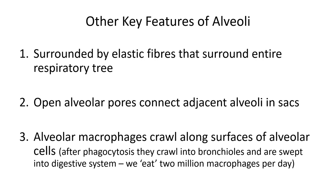Macrophages wander from one alveolus to the next and gobble up anything that shouldn't be there. However, macrophages can only consume a few bacteria before they die — they simply don't have enough enzymes to break down more. When macrophages are dying from this overeating within the lungs, they wander higher up into the respiratory system until they get caught by the mucociliary system — the conveyor belt that carries them up into the throat to be swallowed along with any bacteria they contain. We eat millions of these selfless macrophages every single day.